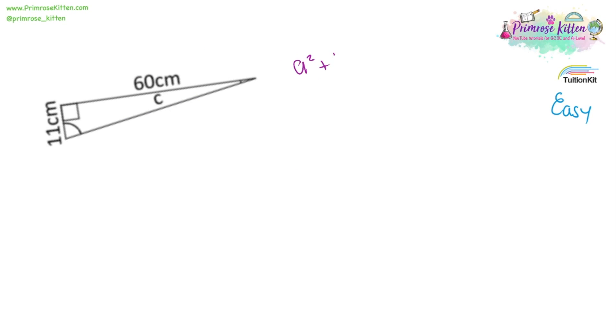Again, we're going to use a squared plus b squared equals c squared. Here we have c, the hypotenuse opposite the right angle, and then I'm going to call this one a and this one b. So a squared, 11 squared, plus b squared, 60 squared, equals c squared. 11 squared is 121 plus 60 squared, 3600, equals c squared. 121 plus 3600 is 3721. Then we can square root that, so c is equal to 61.